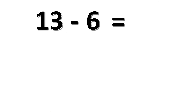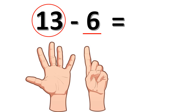Okay kids, we're going to do the last example: 13 minus 6. Which one is the bigger number here, 13 or 6? Yes, 13 is the bigger number. So we're going to start counting backward from 13, and 6 is the smallest number. So kids, let's have 6 fingers up. Start from 13, we're going to count backward: 13, 12, 11, 10, 9, 8, 7. So 13 minus 6 is equal to 7.